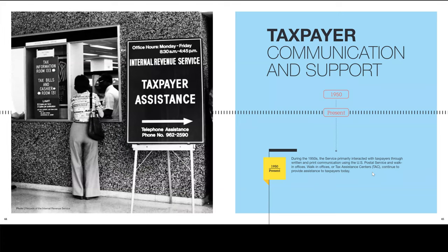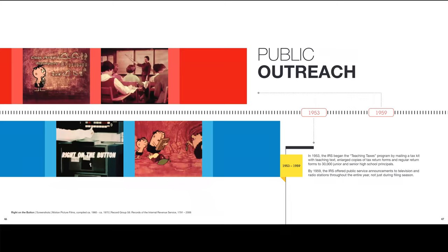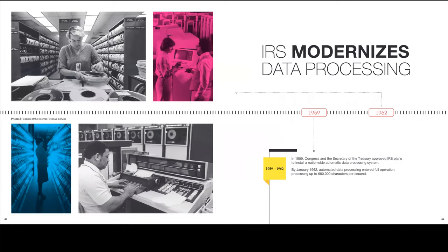Taxpayer communication and support, 1950 to the present: from the 1950s, the service primarily interacted with taxpayers through written and print communication using the U.S. Postal Service and walk-in offices, which continue to provide assistance to taxpayers today. Public outreach, 1953 to 1959: the IRS began teaching taxes by mailing a tax kit with large copies of tax forms to 30,000 junior and senior high school principals. By 1959, the IRS offered public service announcements to television and radio stations throughout the year, not just during filing season. IRS modernizes its data, 1959 to 1962: the Secretary of the Treasury approved a plan to install a nationwide automatic data processing system.